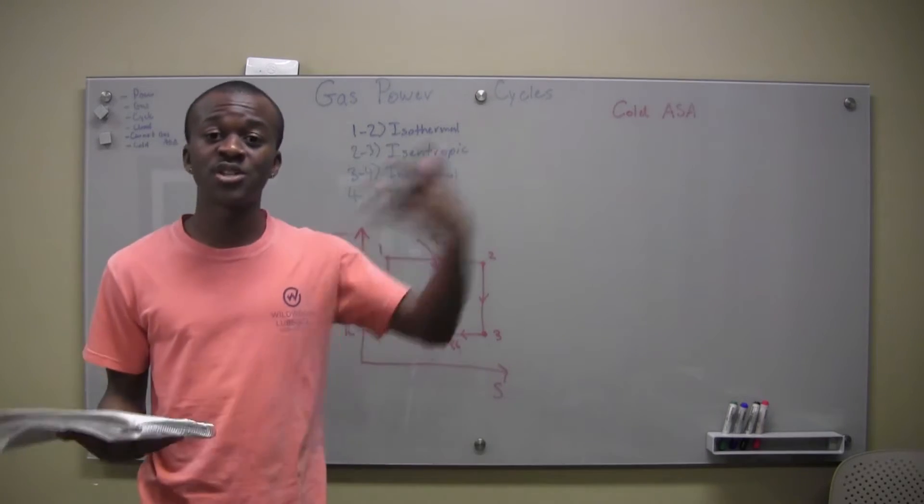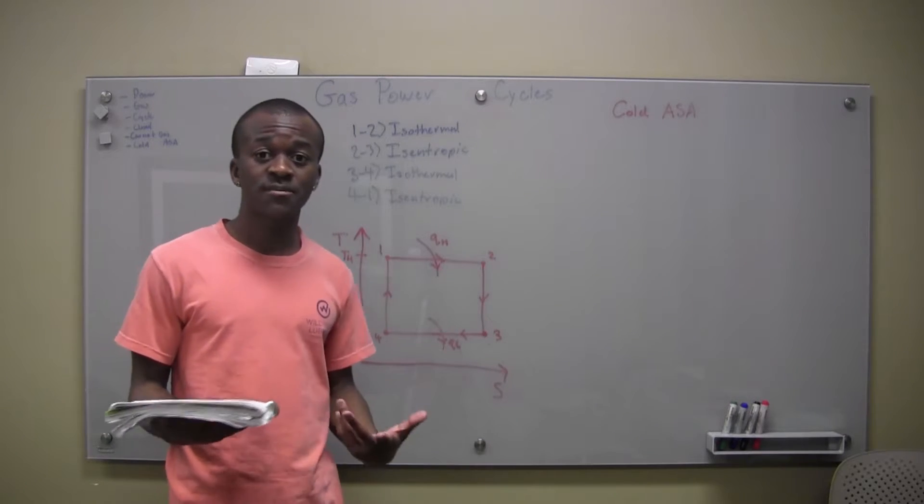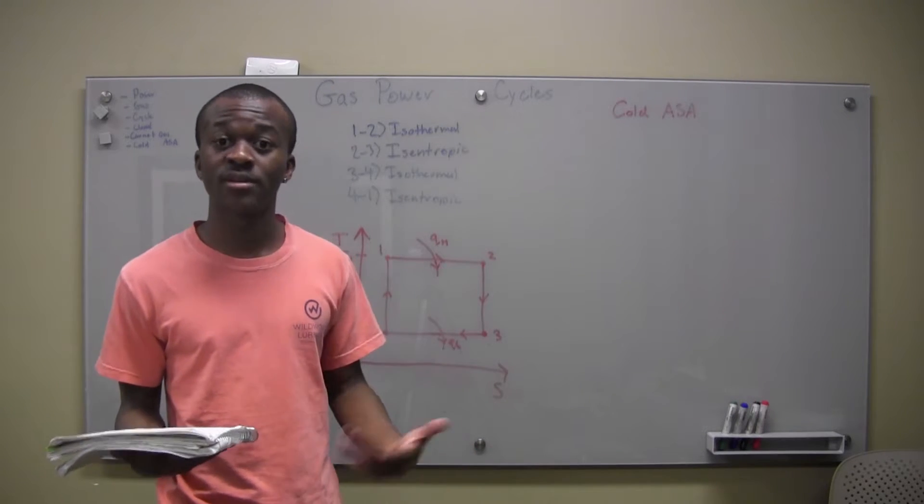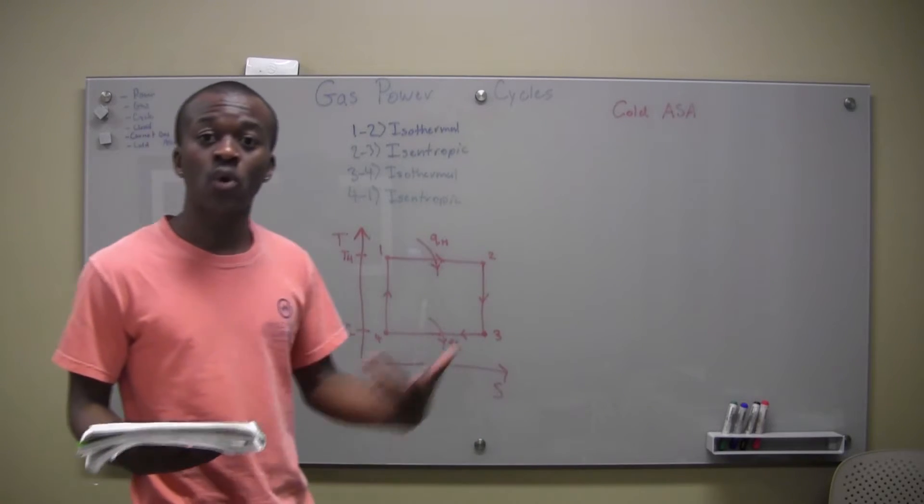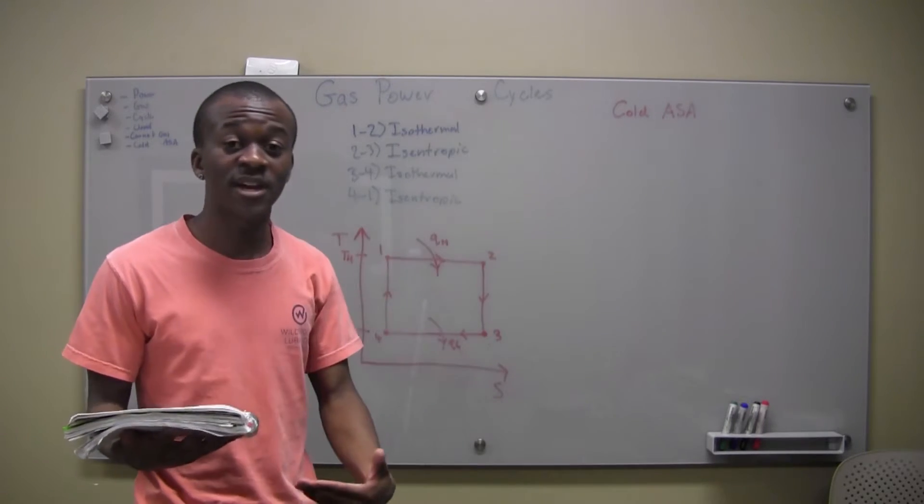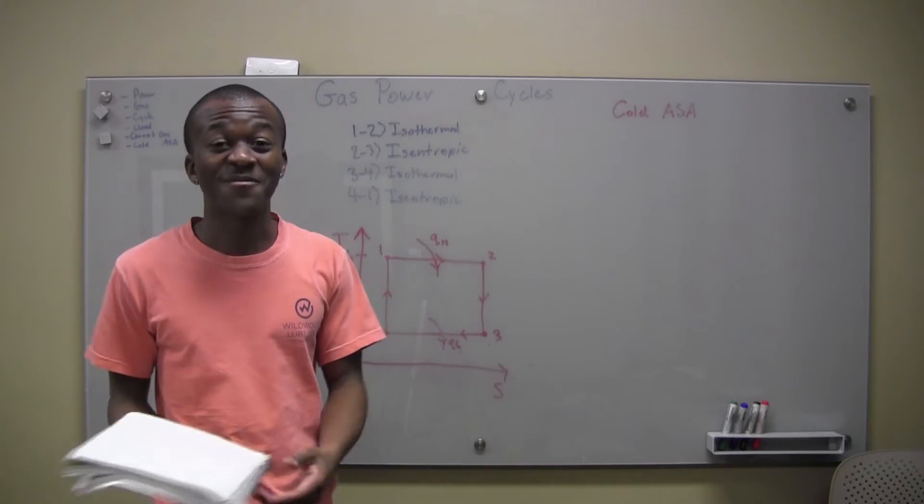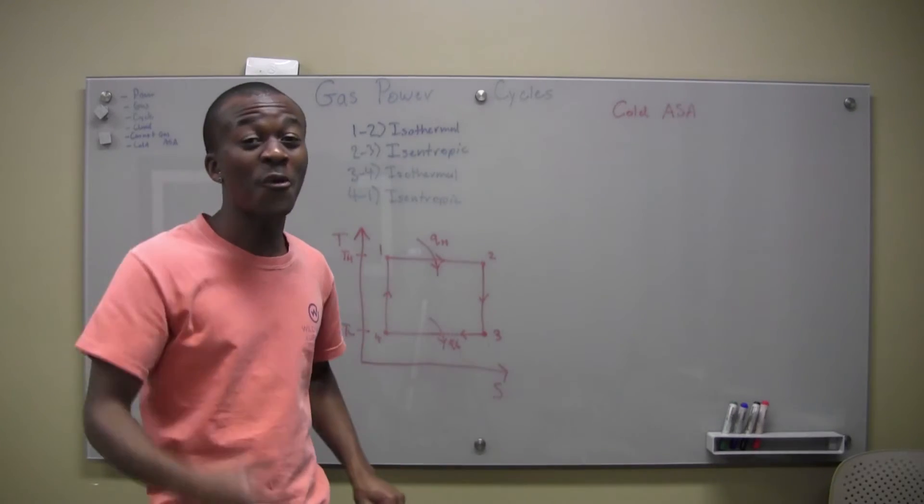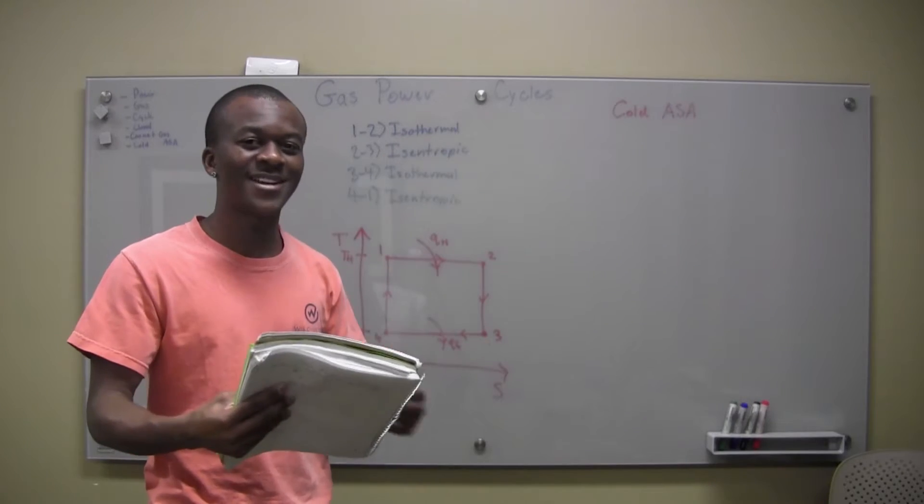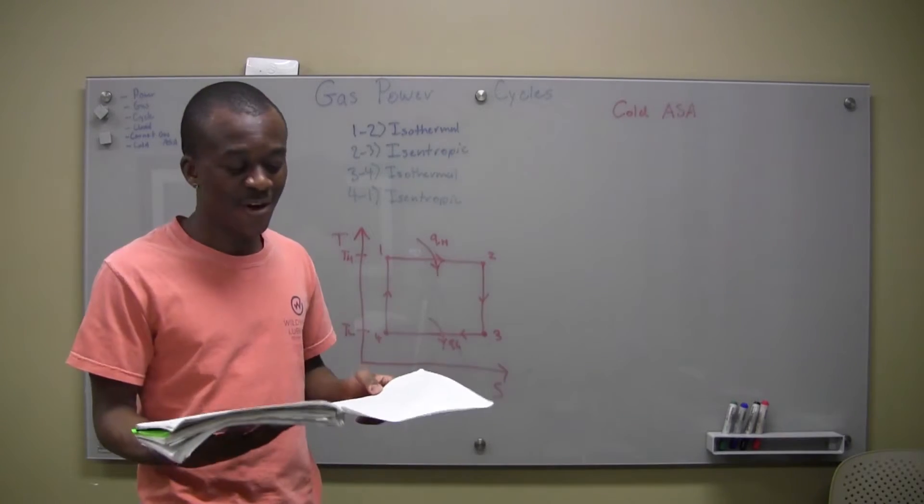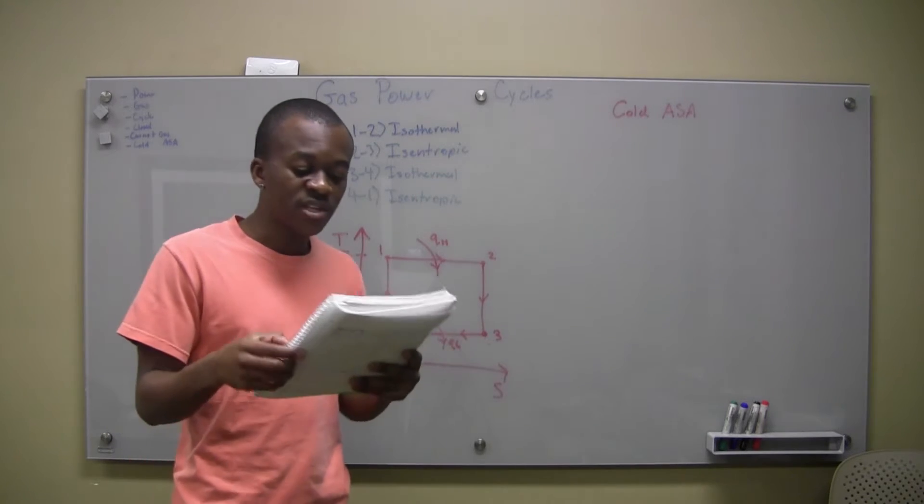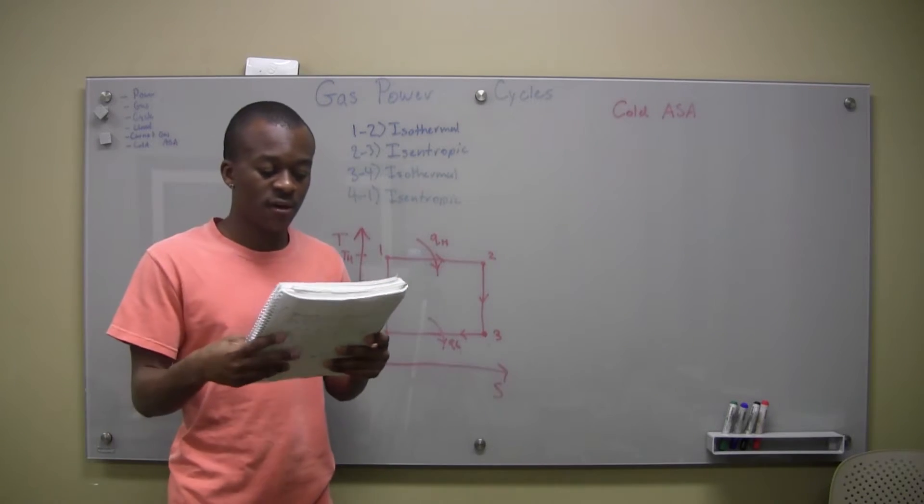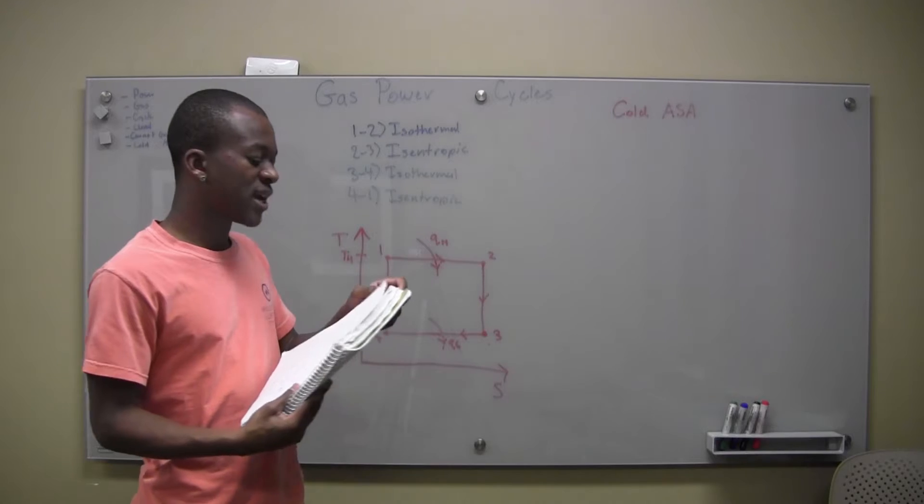So for your assumptions, when they're asking you for an assumption or the conditions as we do in our example problems, you can write cold air standard assumptions. That sums up everything I said. Or if you want to be really smart about it, you can just write out everything I just said. They should give you credit for it. They might even give you more credit. But basically, that's basically what we're doing with these gas power cycles.